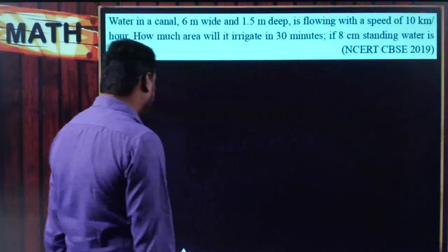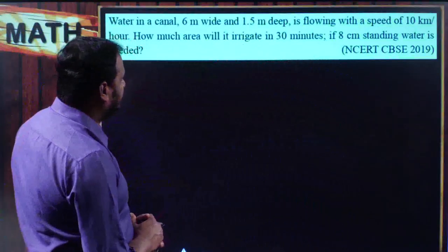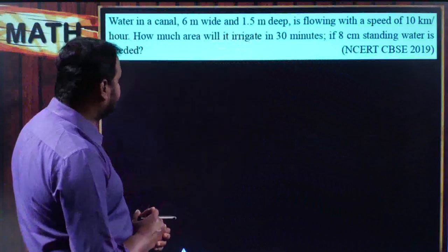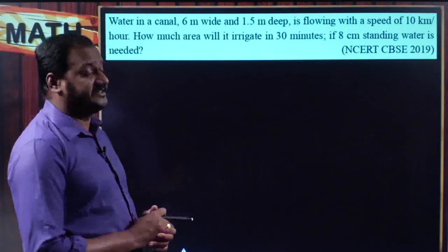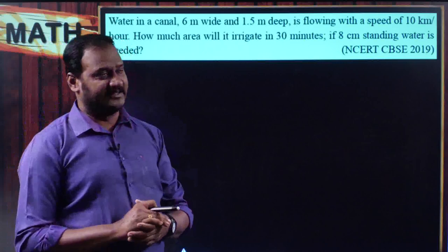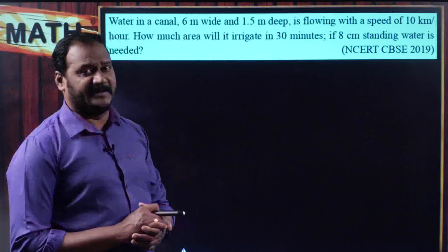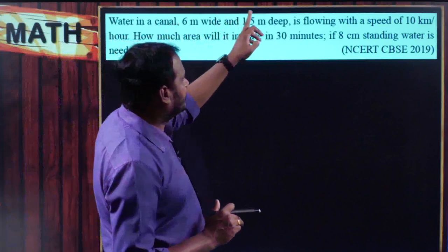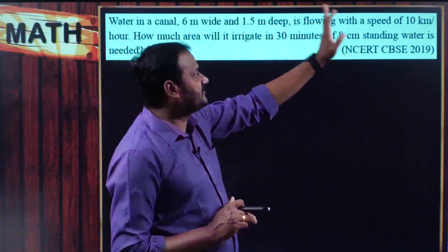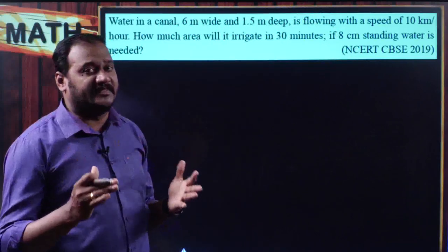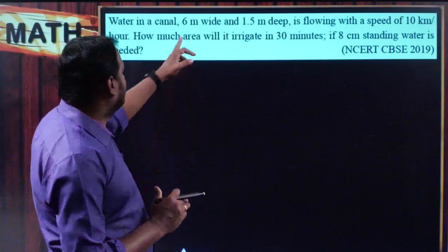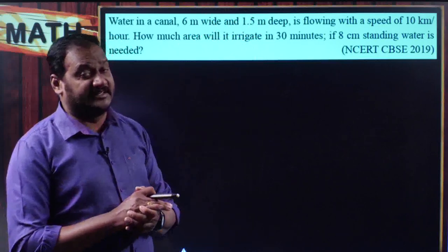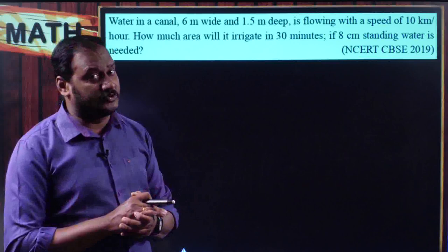The very first problem: water in a canal 6 meters wide and 1.5 meters deep is flowing with a speed of 10 kilometers per hour. How much area will it irrigate in 30 minutes if 8 centimeters of standing water is needed? This is a very interesting problem based on speed, distance, and time. The canal has a given width and depth, so we can consider the canal to be in the shape of a cuboid.